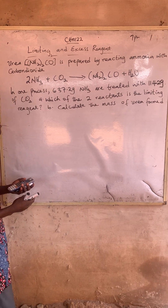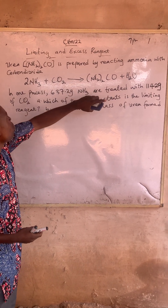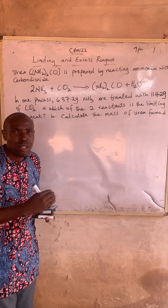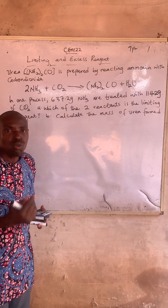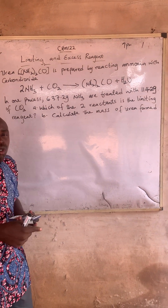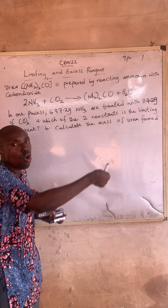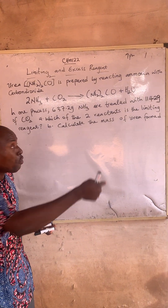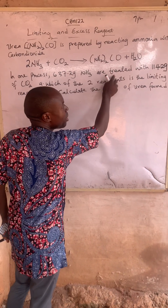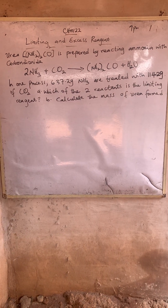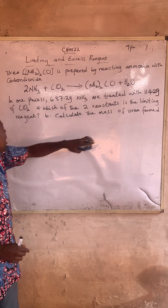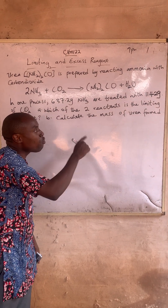Now we continue. The question says: Urea is prepared by reacting ammonia with carbon dioxide. Take note — unlike other aspects of calculation chemistry whereby you are given one known and asked for the unknown, this one will give you two knowns and you will be asked to calculate the unknown mass of the product from the reaction. In one process, 637.2g of ammonia are treated with 1142g of CO2. The question asks: which of the two reactants is the limiting reagent, and calculate the mass of Urea formed.